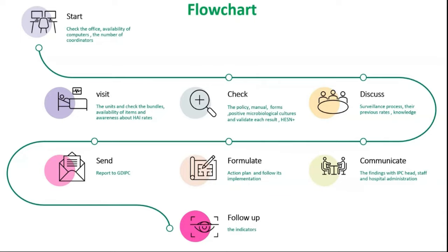Then make a checkup for availability of an updated policy based on updated guidelines, manuals, all documents, and updated forms. Then review positive blood cultures and availability of results, and check quality of the data entry in the HUSAIN bloodstream system. Then conduct validation visits or supportive visits, and communicate all findings with ICU heads and the hospital director.